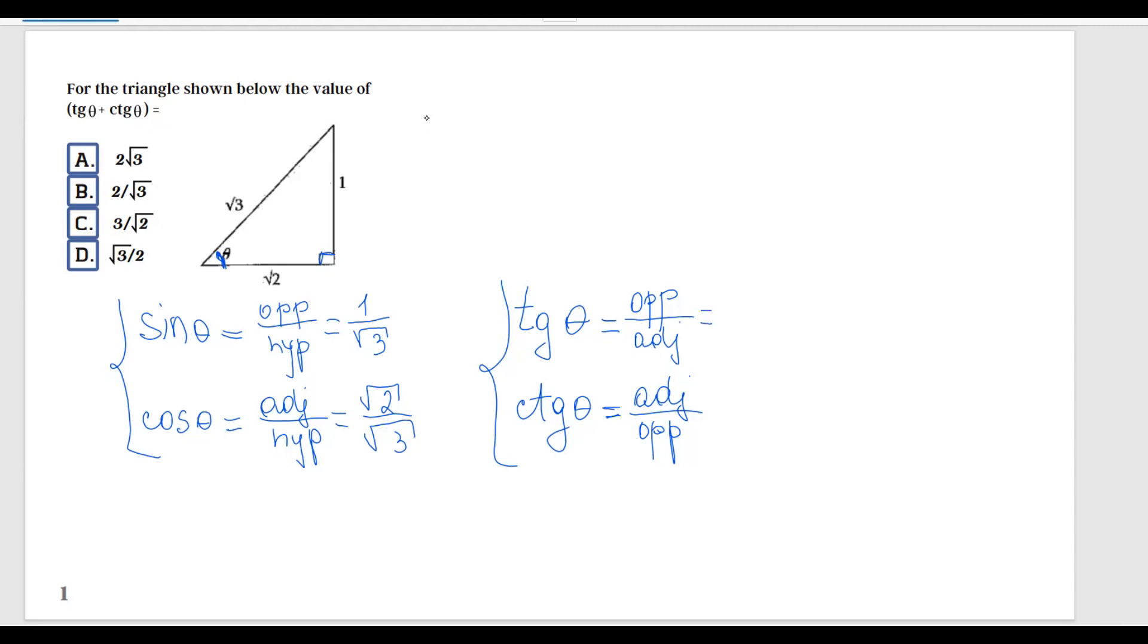For now I'm going to go ahead and move on here, and I'm going to write the formula for tangent—opposite over adjacent. So what is the opposite? It is 1, and then adjacent is square root of 2. And then for cotangent we have adjacent, square root of 2, divided by the opposite, which is 1.